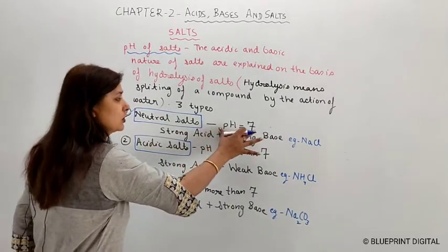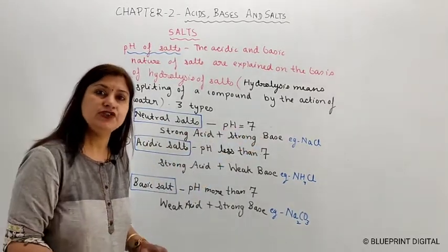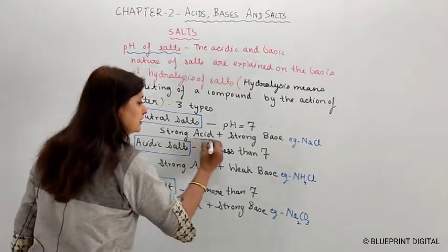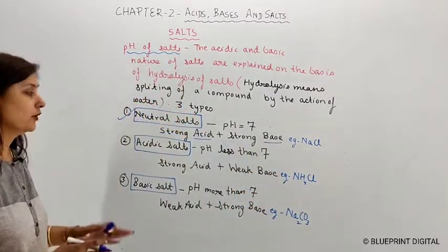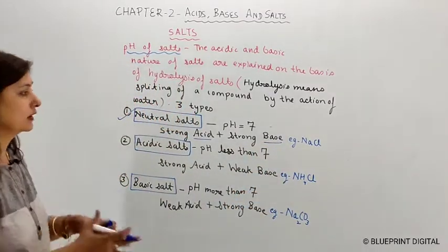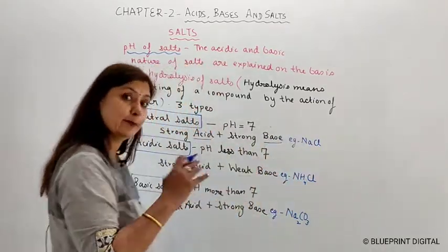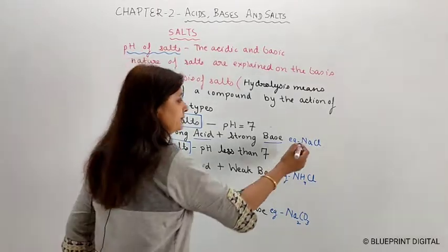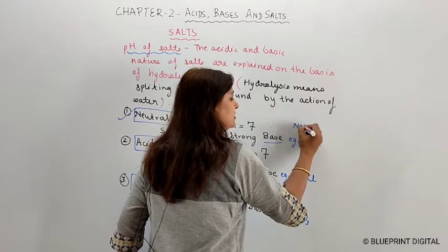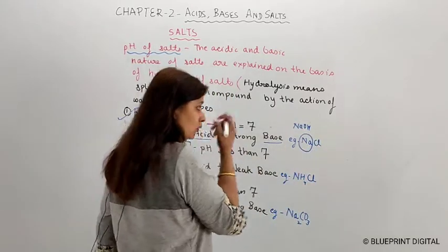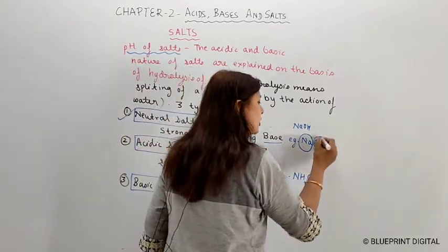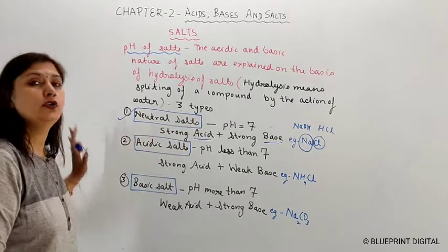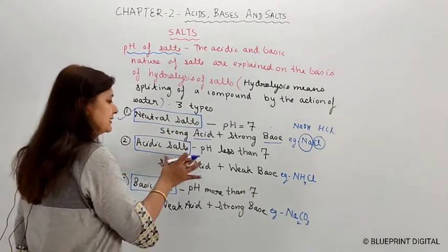Neutral salts have a pH of 7. Neutral salts are formed from a strong acid and a strong base — both are strong. The example is sodium chloride, NaCl: its base is NaOH, which is a strong base, and its acid HCl is a strong acid. When a strong acid and strong base react, the result is a neutral salt. Acidic salts have a pH less than 7.